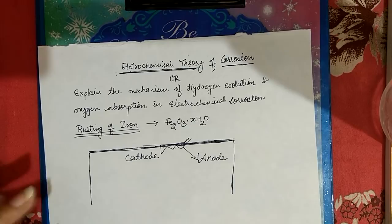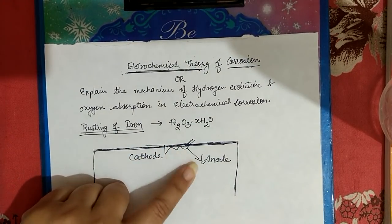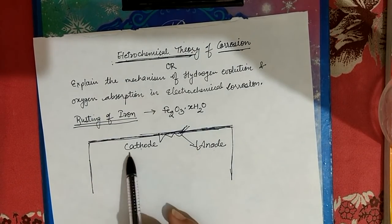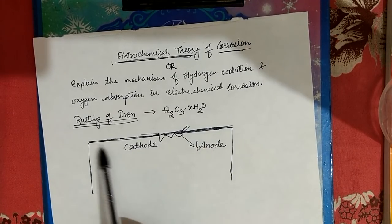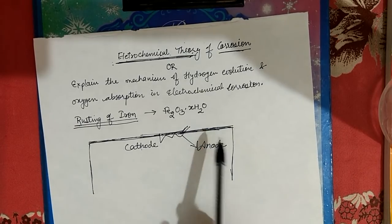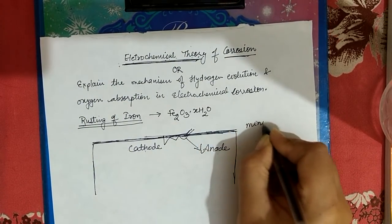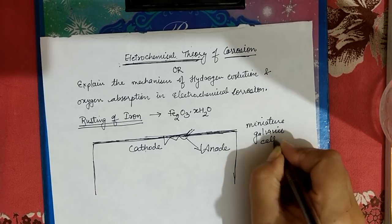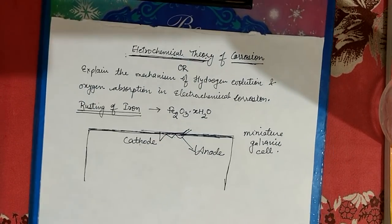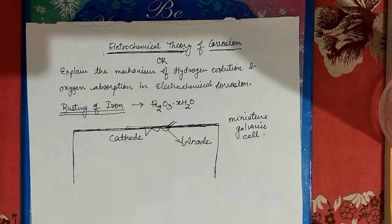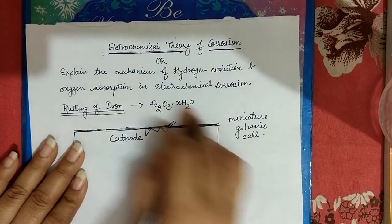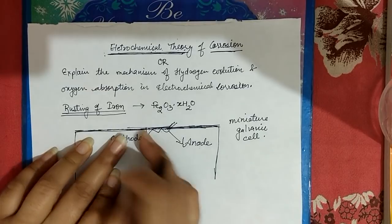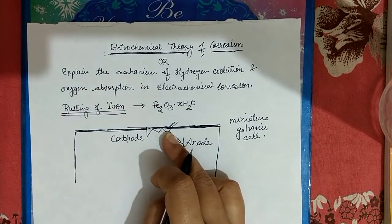According to electrochemical theory, the chemically non-uniform parts formed on the iron will behave as a miniature galvanic cell. Just like an electrochemical cell has a cathode and anode, this cell will behave the same way. Reaction will take place, and since it's happening on iron, rusting will take place.